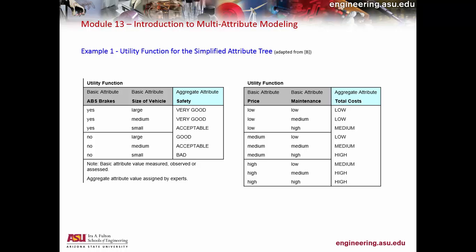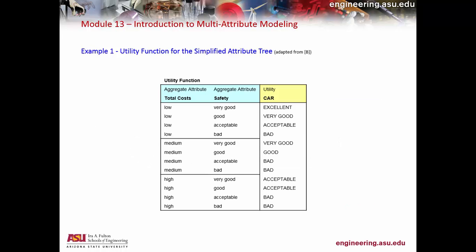You assess whether each combination is good, better, or acceptable. You do the same thing with basic attributes such as price and maintenance, then look at total costs to see how it all works out when combining them together. Here's another example of total costs and safety that you can read through.